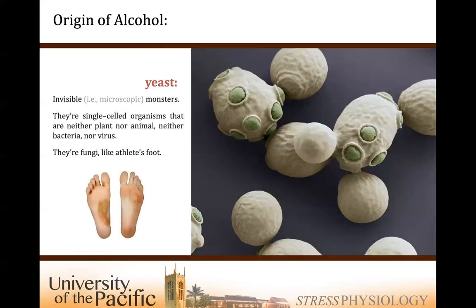What is yeast? It's the thing giving us our alcohol — our beers and wines and distilled liquors. We begin with the metabolism of yeast. It's a fungus, and it reproduces asexually. Those little budding daughter cells you see in the image — those are budding yeasts from asexual reproduction.